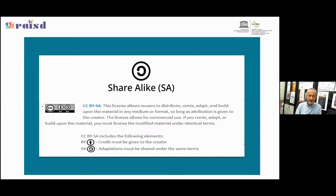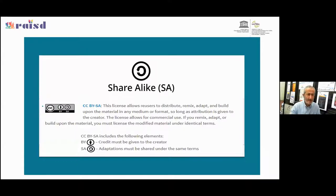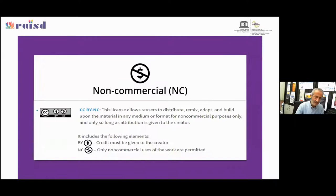The second condition is ShareAlike — CC BY SA. You'll notice the Attribution symbol appears on all licenses. With ShareAlike, you can reuse, distribute, remix, and adapt the work, but whenever a new work is created from this work you cannot change the license — you must distribute the new work under the same license.